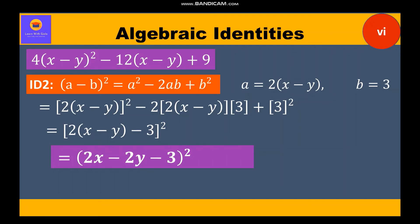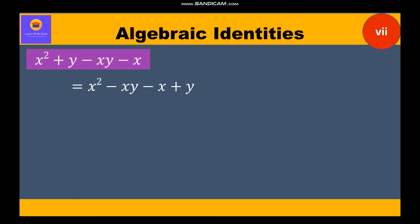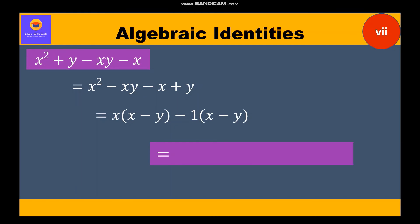Question 7: factorize x² + y - xy - x. There are four terms, so we group and rearrange as x² - xy - x + y. From the first two terms, we take x common to get x(x - y). From -x + y, we factor out -1 to get -1(x - y). Since (x - y) is common in both terms, we take it common and get (x - y)(x - 1).